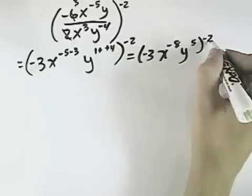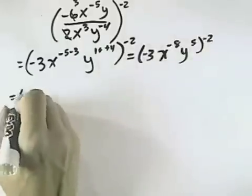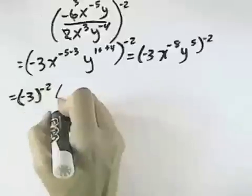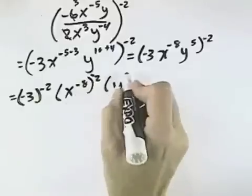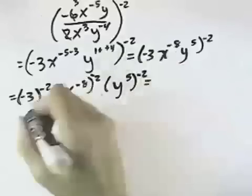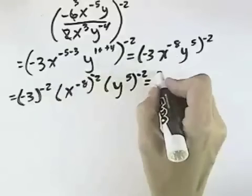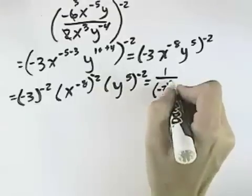Now because I have the exponent of negative 2 on the outside, I can distribute that through everything on the inside to get negative 3 to the negative 2nd power, x to the negative 8th to the negative 2nd power, and y to the 5th to the negative 2nd power, which gives me, for the negative 3, this would be 1 over negative 3 to the positive 2nd power.